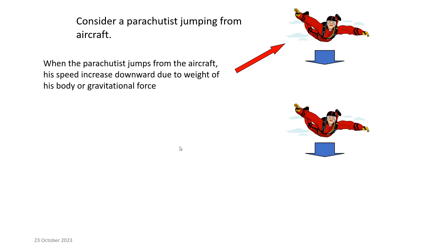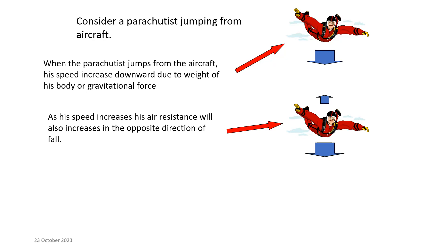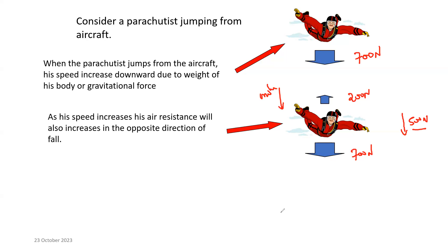As the speed of the parachutist increases — because in real life we have air around us — the air resistance will also increase. When air resistance increases, the resultant force and acceleration will decrease. For example, if the weight of the parachutist is 700 newtons, but air resistance is now 200 newtons acting opposite to the direction of motion, the resultant force is 500 newtons downward.